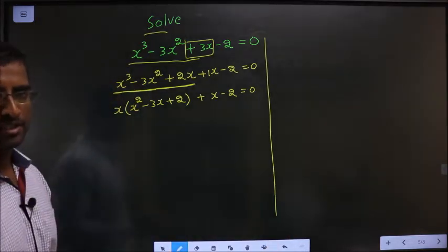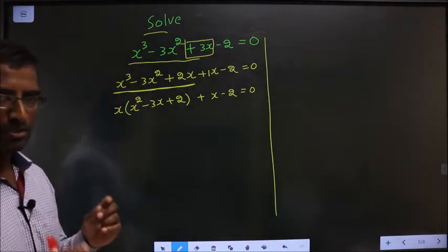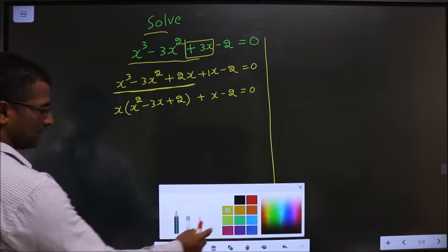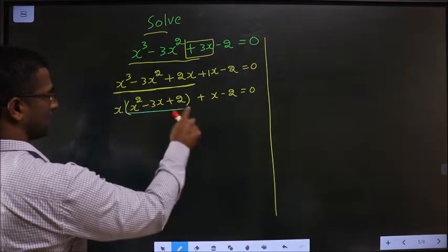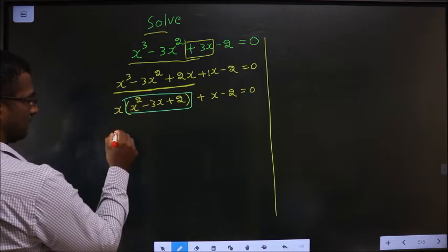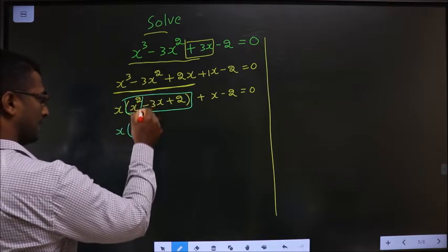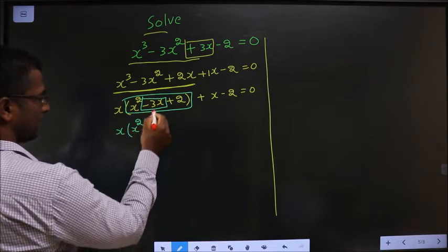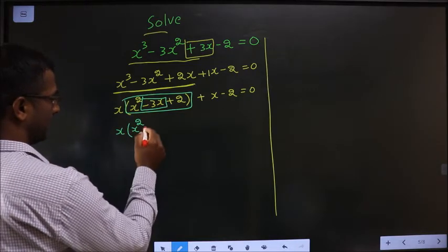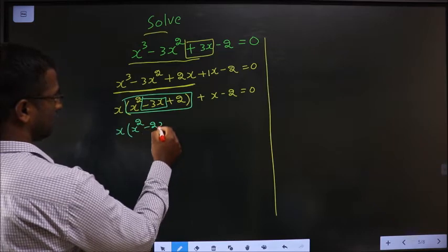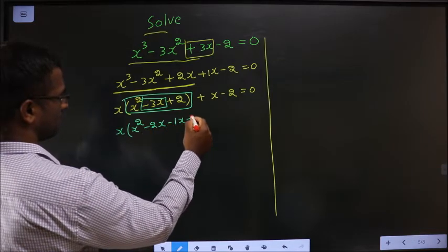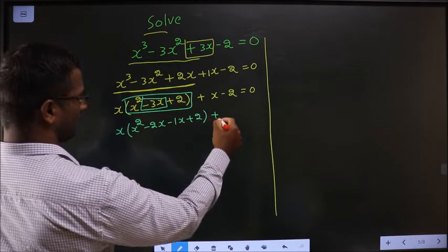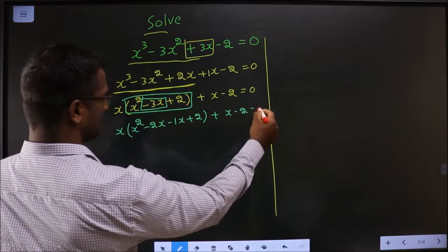How do we simplify further? Did you see the quadratic equation? This one. So we should factorize it now. And how do we factorize? Again change the x term. This time in place of minus 3x, I will write minus 2x minus 1x plus 2 plus x minus 2 equal to 0.